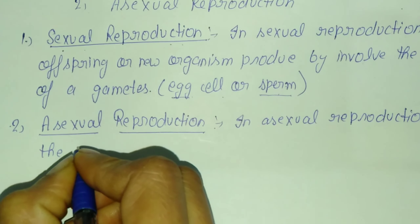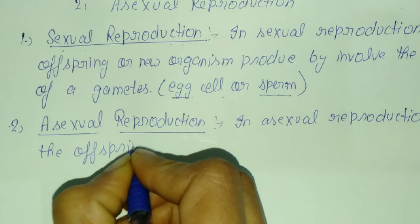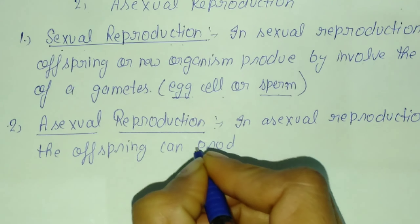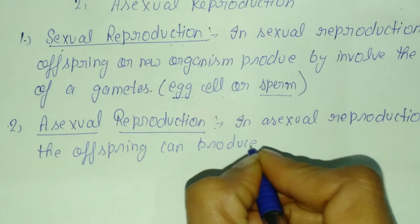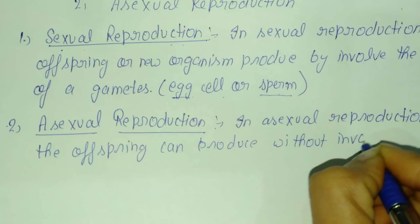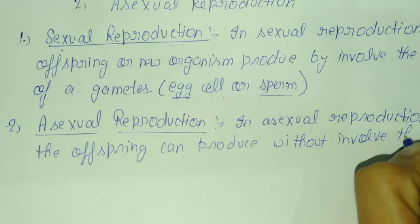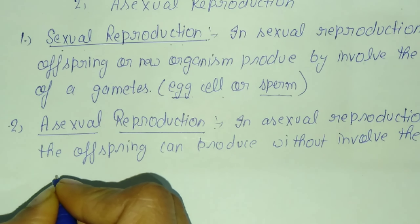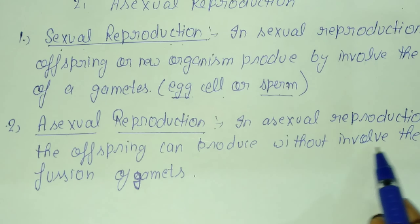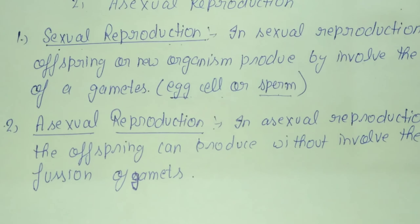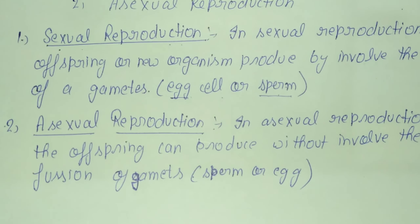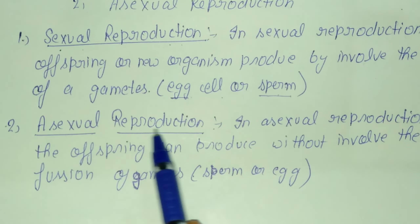In asexual reproduction, the offspring can be produced without involving the fusion of gametes.